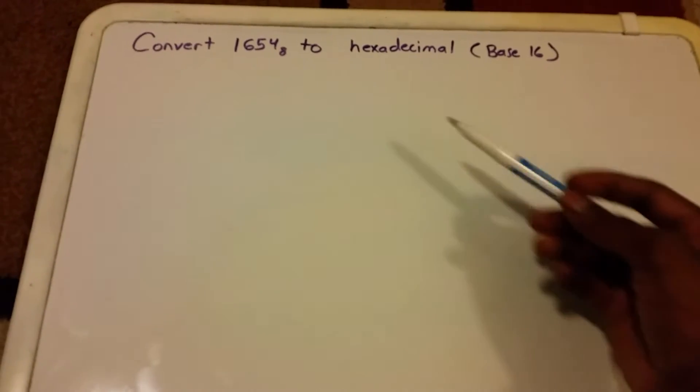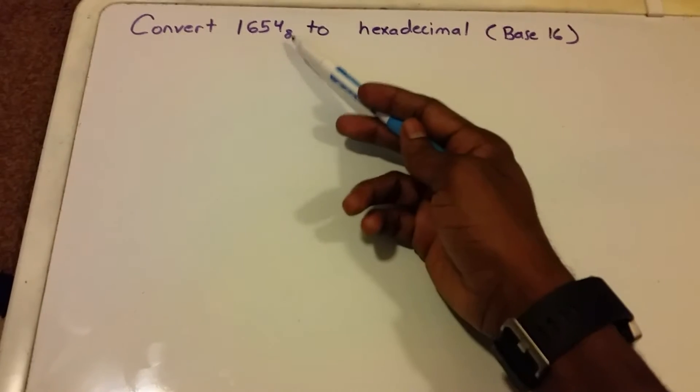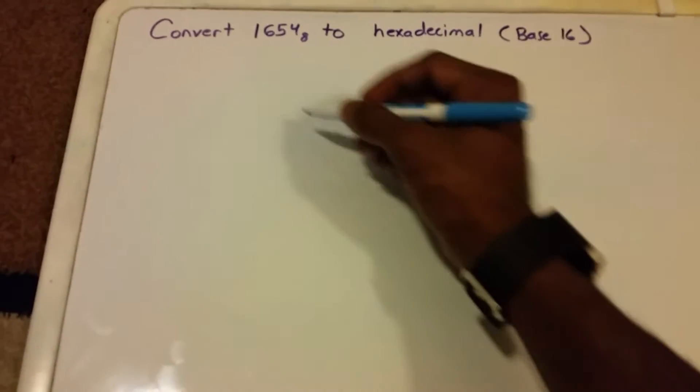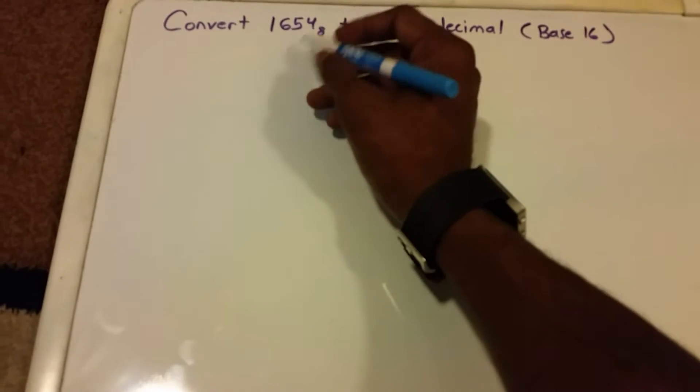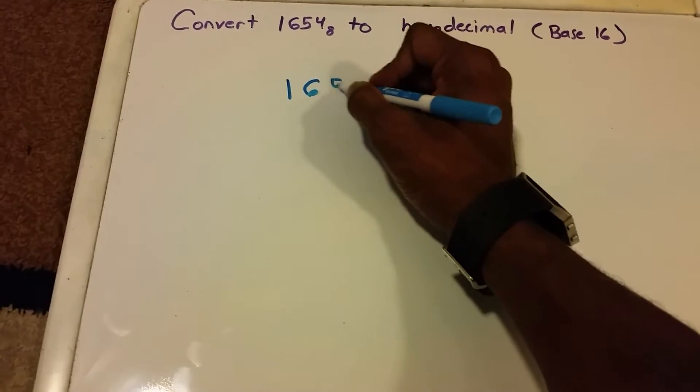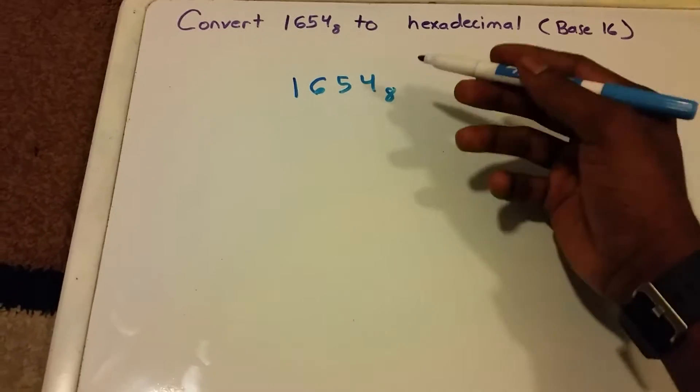Welcome to this video. Here what we want to do is convert 1654 in base 8 to hexadecimal or base 16. We're going to rewrite our number in octal or base 8, which is 1654, and we're going to convert this to binary first.